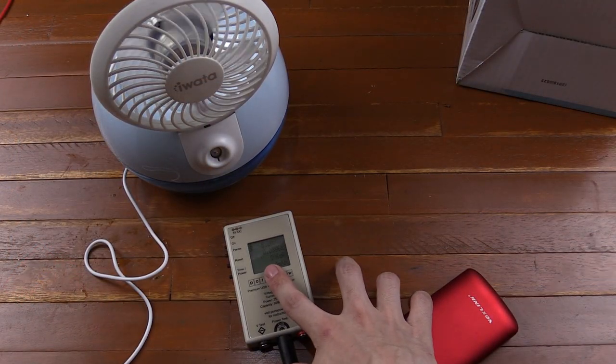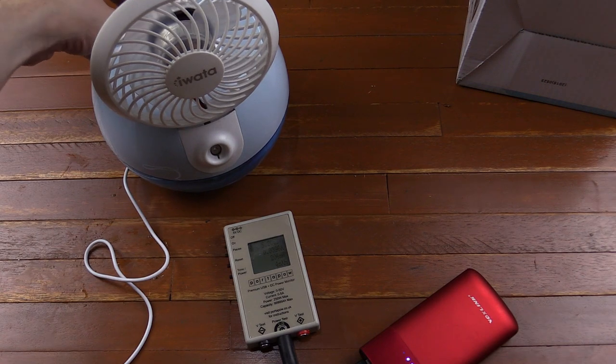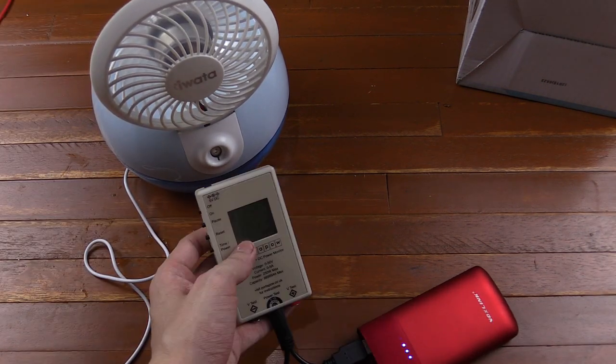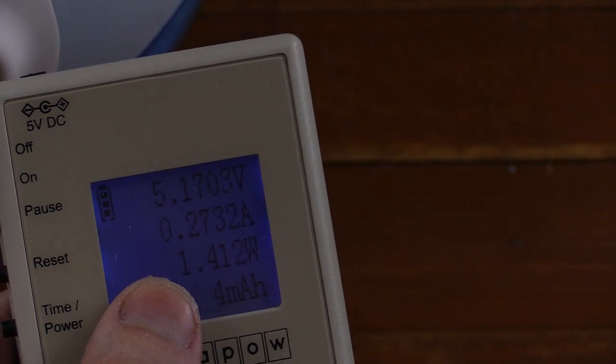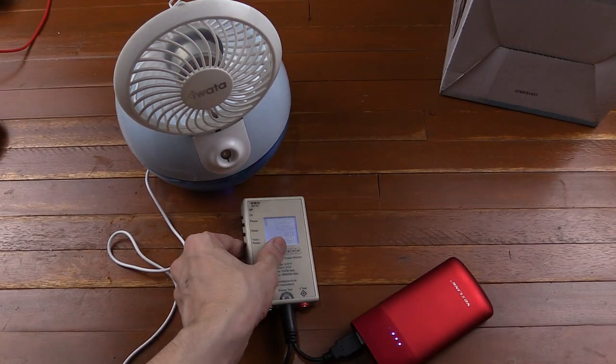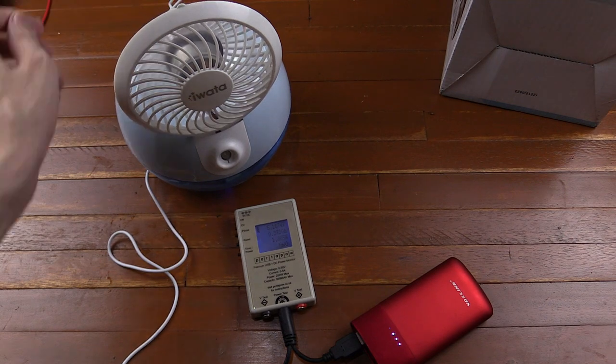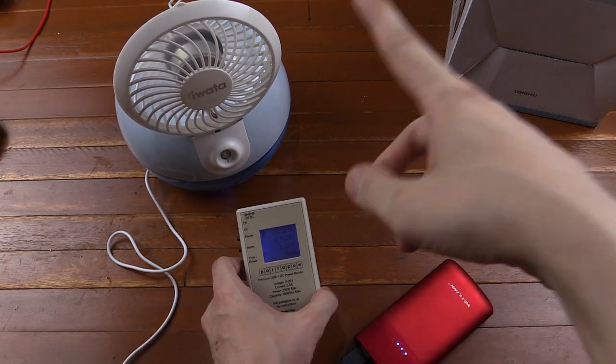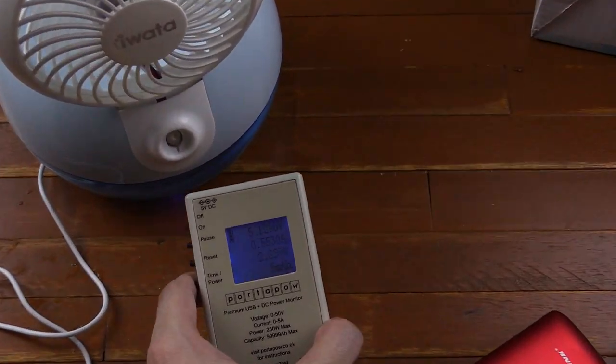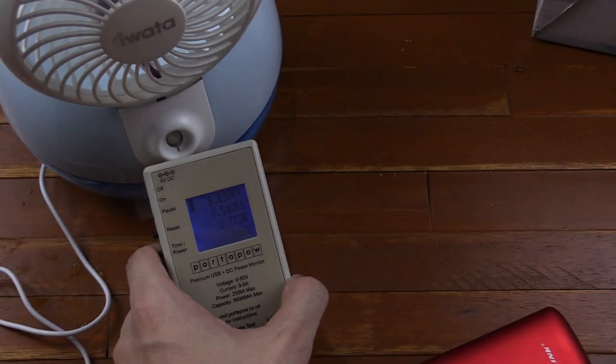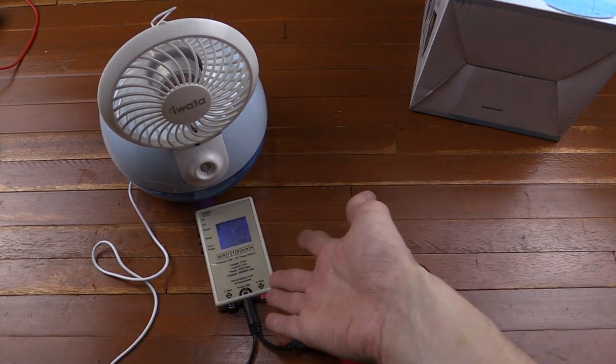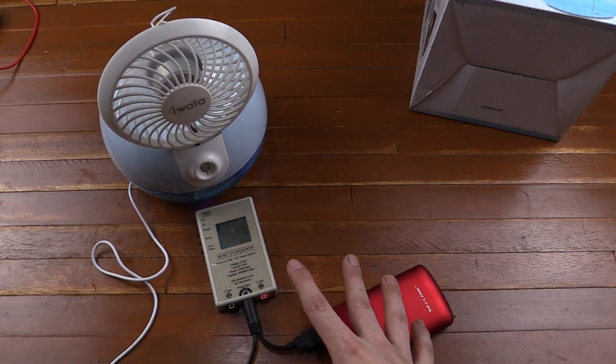Now let's use my USB wattmeter to measure how much power this consumes. If I put on just the fan and then zoom in on the wattmeter, you can see that we're consuming around 1.4 watts. If I turn on the mist, you can hear that the fan does slow down, and then we're consuming around 2.7 watts. Now they state this is 2.5 watts, but it's so little difference that I think that's fine.